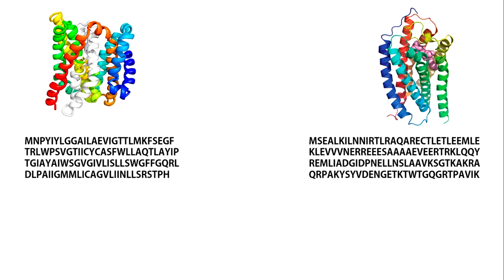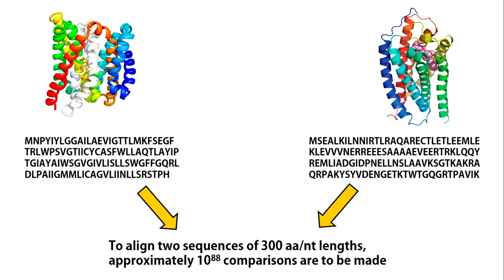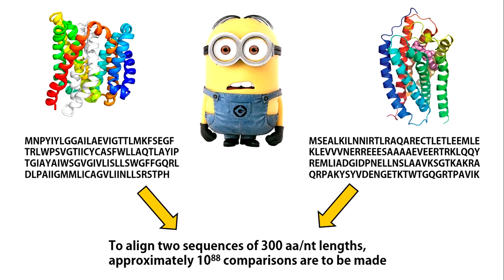Consider two protein sequences or nucleotide sequences of length 300 that you want to align. If you consider all possible matches, insertions and deletions to find the optimal alignment, you must perform 10 to the power of 88 comparisons. Even with powerful computers, this task is quite time consuming.